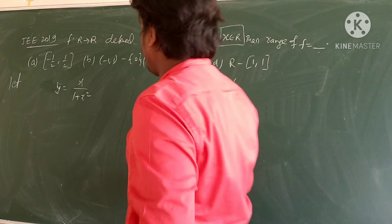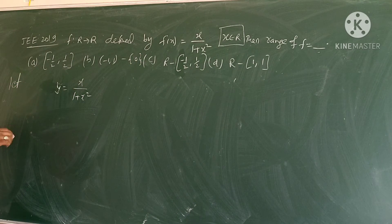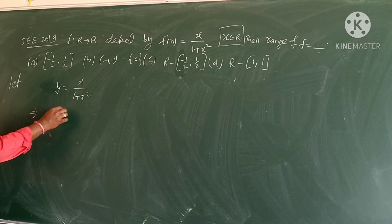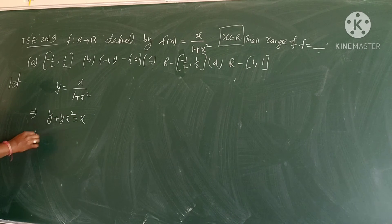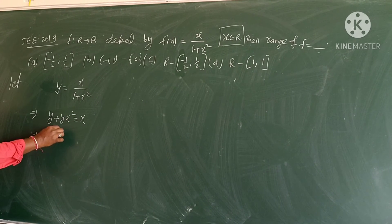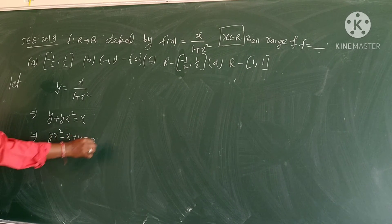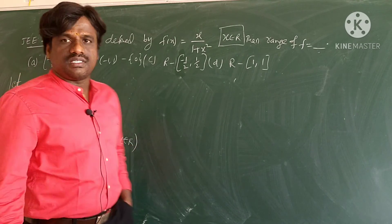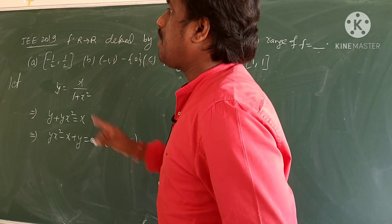This is a linear-by-quadratic form. We set y = x/(1 + x²) and cross multiply: y(1 + x²) = x, which gives yx² - x + y = 0. This is a quadratic in x, and since x belongs to ℝ, we need the discriminant to be non-negative.